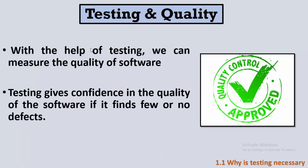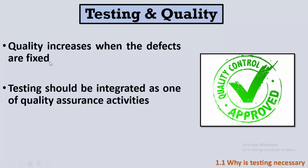Now let's talk about the relationship between testing and quality. The developer may make an error or mistake, and the tester detects the defect caused by that error. When the tester reports this defect to the developer, the developer fixes it. So what the tester does is measure the quality — the tester measures quality but doesn't increase it. Quality increases when the developer fixes the defects. Testing also gives confidence in the quality of the software; if few or no defects are found, this gives stakeholders confidence to release it.